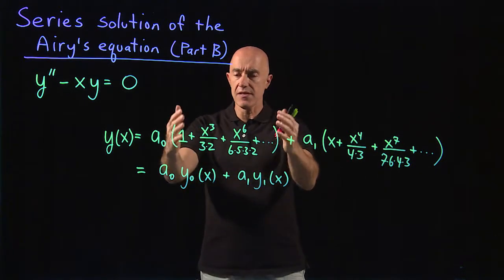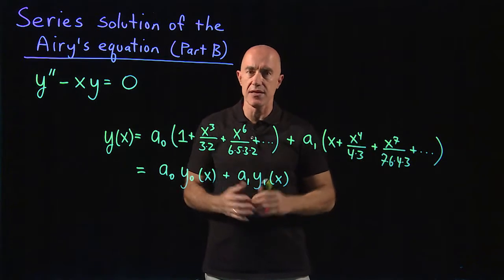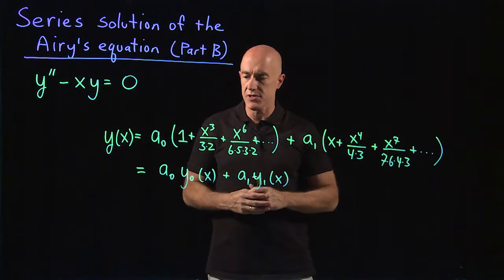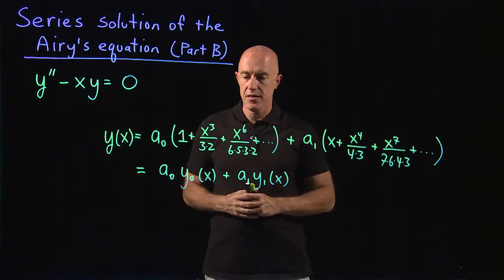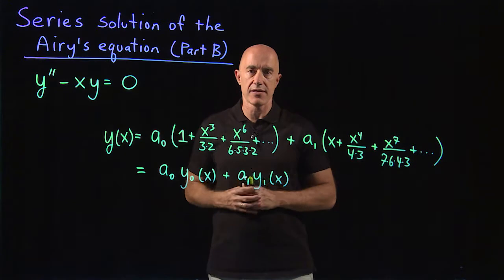We can define these two independent series as two functions. They're called Airy functions. The first one we call y naught of x. The second one we call y1 of x.